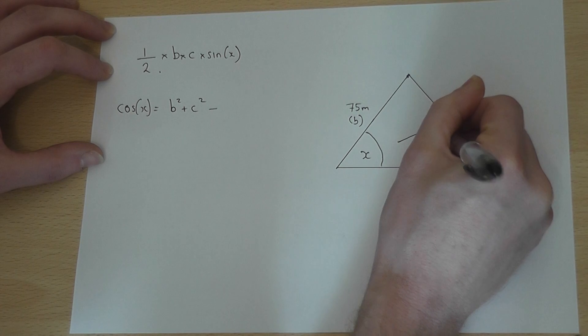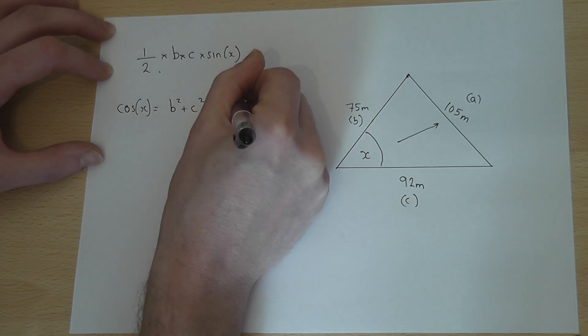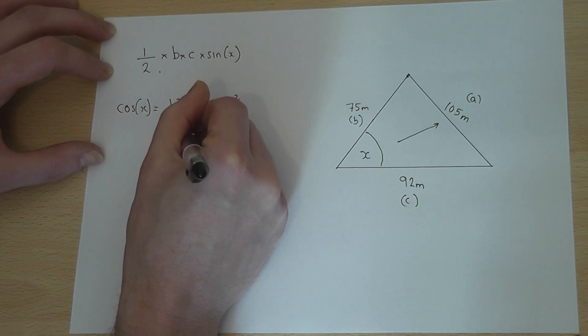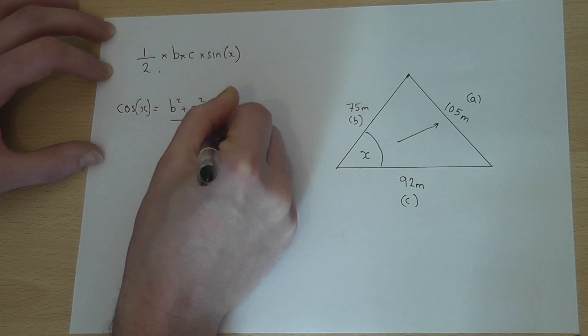take away this side here, which is opposite, we'll call A, take away A squared, all over 2 times B times C.